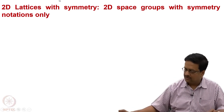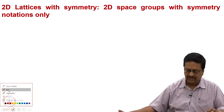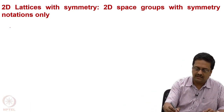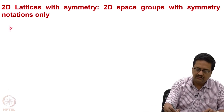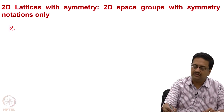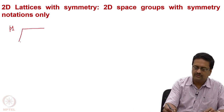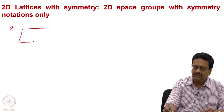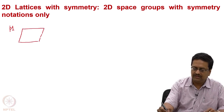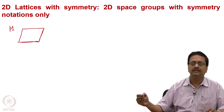The first symmetry element that we have in a 2D lattice is P1, and since there is no symmetry in this — which means it has only a 360-degree rotational symmetry and nothing else — the oblique lattice we draw for the P1 lattice does not have any symmetry element indicated in it.